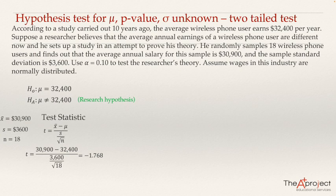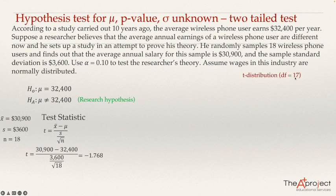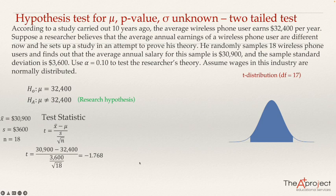Now we compute the p-value. This t-value comes from a t-distribution with n minus 1 degrees of freedom. Since n equals 18, the degrees of freedom is 17. The p-value is the smallest value of alpha needed to reject the null hypothesis. Because the alternative hypothesis uses "not equal to," this is a two-tail test.